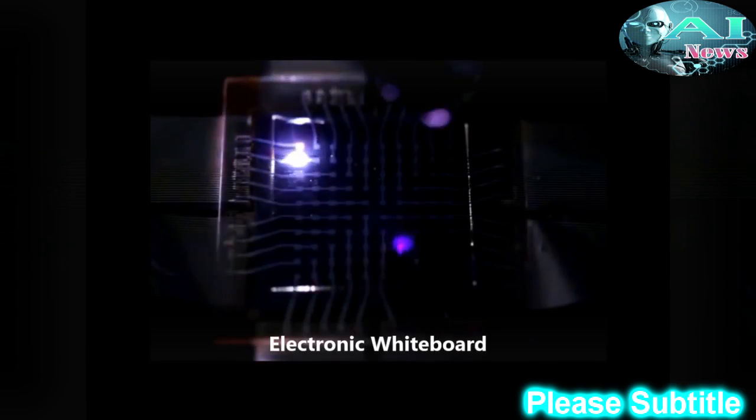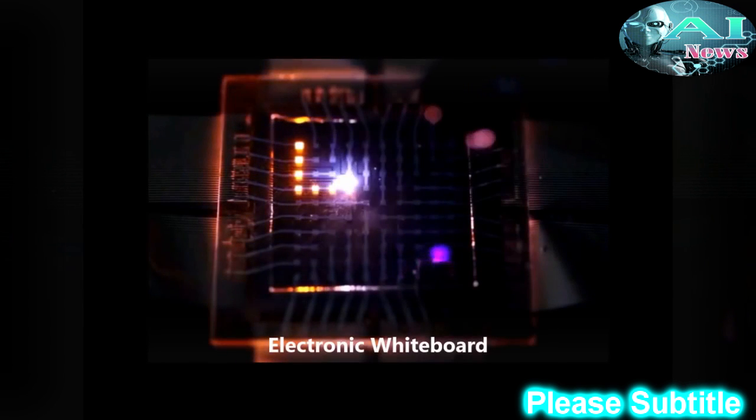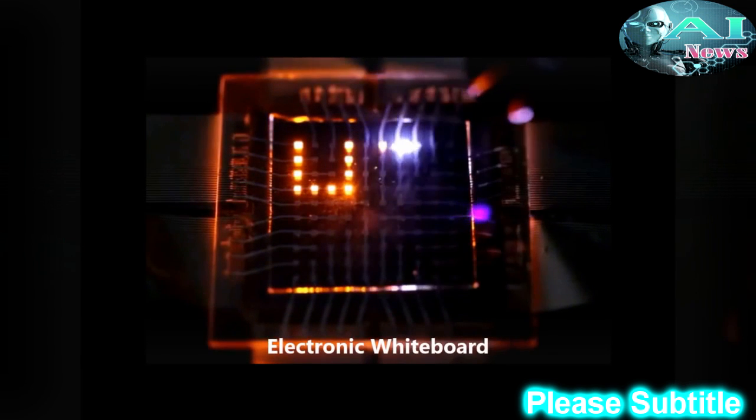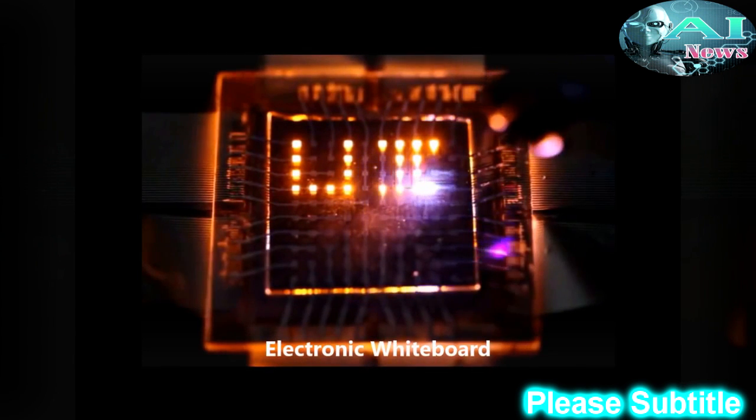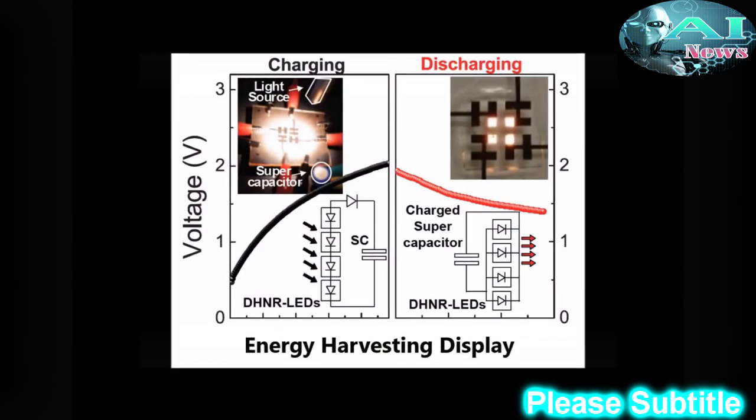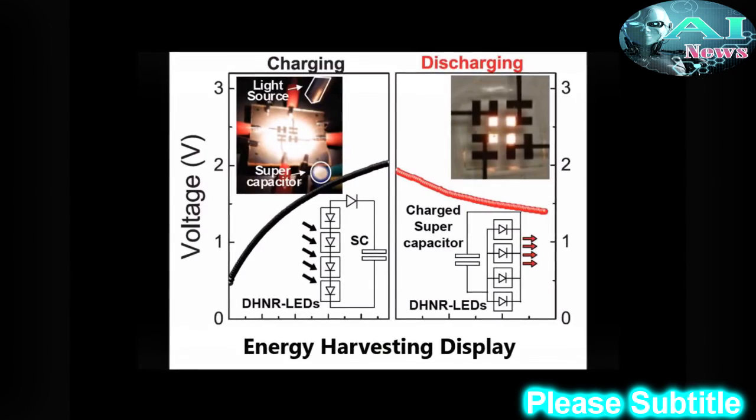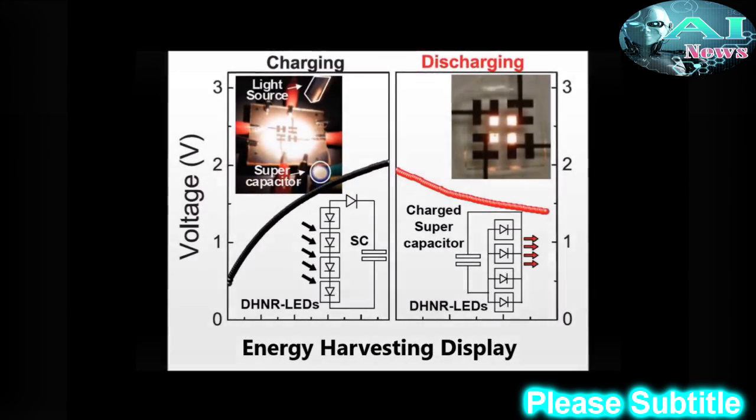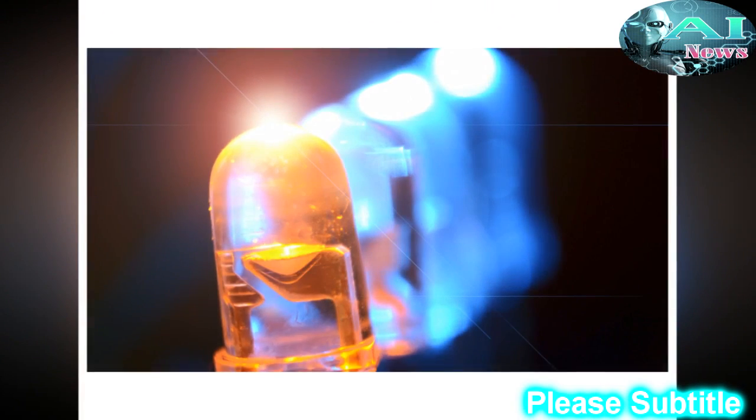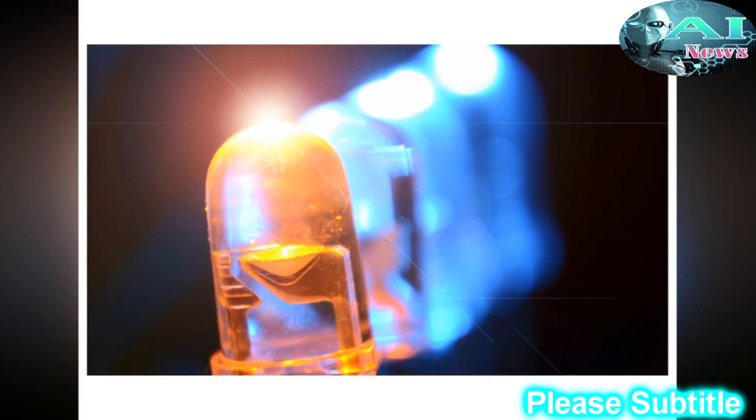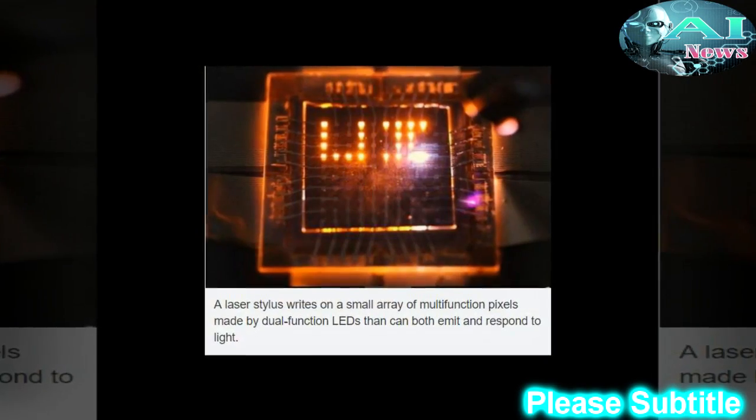So imagine your cell phone just sitting there collecting the ambient light and charging. That's a possibility without having to integrate separate solar cells. We still have a lot of development to do before a display can be completely self-powered, but we think that we can boost the power harvesting properties without compromising LED performance, so that a significant amount of the display's power is coming from the array itself.